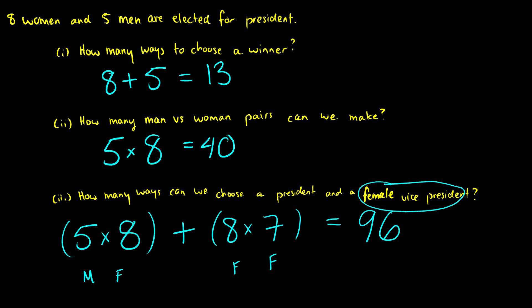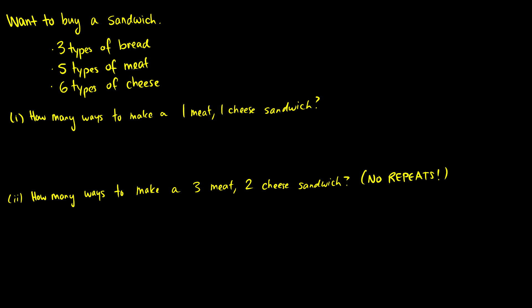There's the first question. Second question, we want to buy a sandwich, and this store has three types of bread, five types of meat, and six types of cheese.